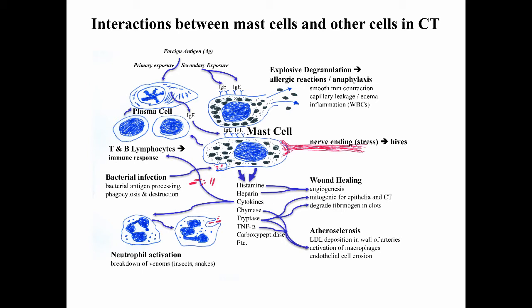As a result of the release of these granules, you often see smooth muscle contraction, lots of capillary leakage and edema, and inflammation as other white blood cells are drawn into the connective tissue. It's also thought that nerve endings might come very close to mast cells and signal them — if an individual is under stress, mast cells might release granules causing a minor allergic reaction, presenting as a rash or hives.